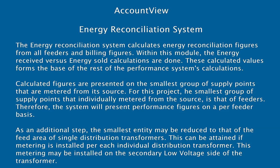Therefore, the system will present performance figures on a per-feeder basis. As an additional step, the smallest entity may be reduced to that of the feed area of single distribution transformers. This can be obtained if metering is installed per each individual distribution transformer. This metering may be installed on the secondary low-voltage side of the transformer.